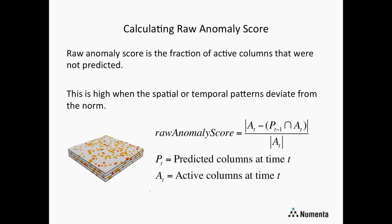The first step is computing the raw anomaly score from the temporal memory. The temporal memory is learning the spatial and temporal patterns in the data. We look at the active and predicted cells and compute the raw anomaly score as the fraction of active columns that were not predicted. This is a value between 0 and 1, where 0 means the value was completely predicted and 1 means it was completely unexpected. This score will be high when spatial and temporal patterns deviate from what's been learned in the past.